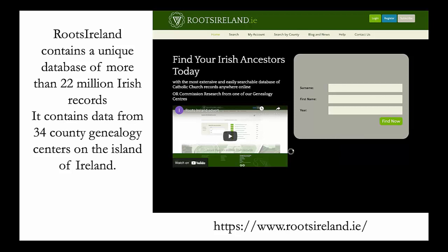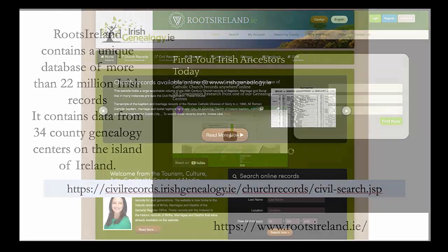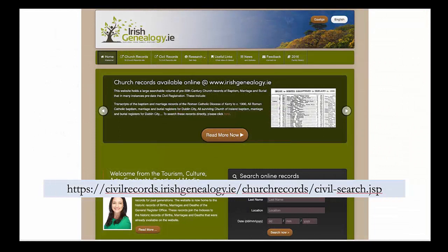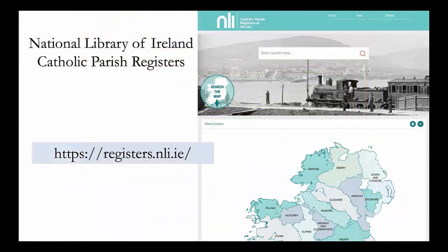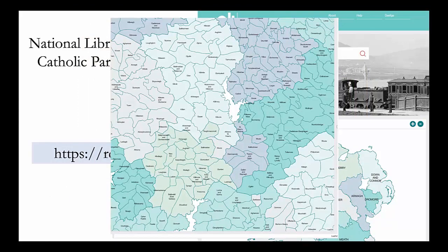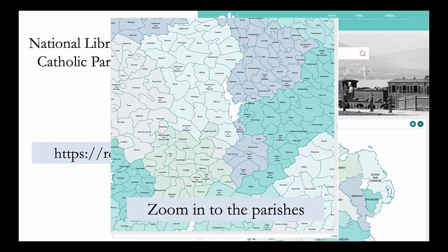Roots Ireland IE contains a unique database of more than 22 million Irish records, with data from 34 county genealogy centers on the island of Ireland. The IrishGenealogy.ie website has both church records and civil registration records. The National Library of Ireland has a large collection of Catholic parish registers and also contains an interactive map of the parishes of Ireland.